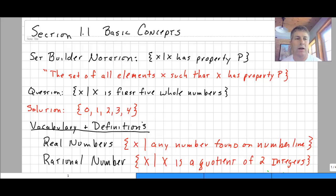So, if you received a question, if you got a question that said, tell me what is, what makes up the elements X that are the first five whole numbers, well our solution would be the set 0, 1, 2, 3, and 4.